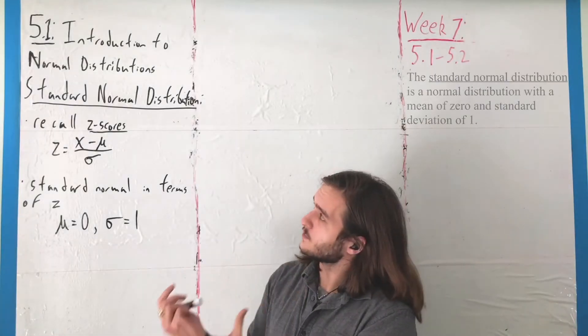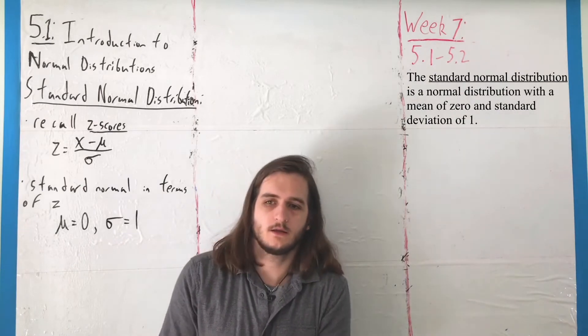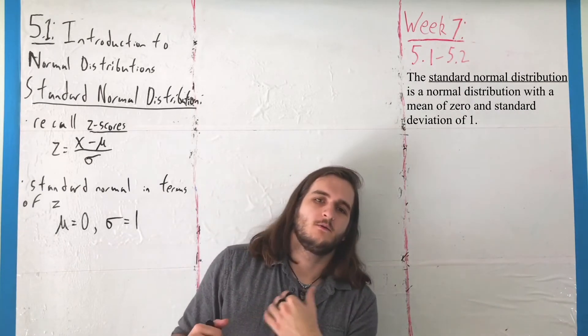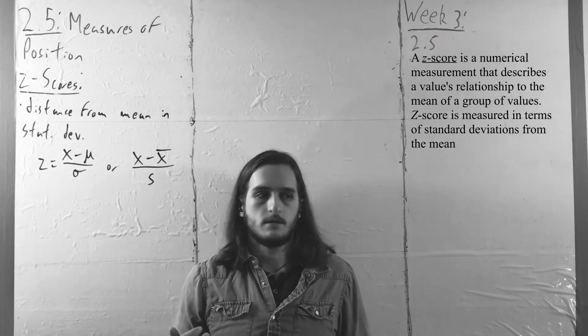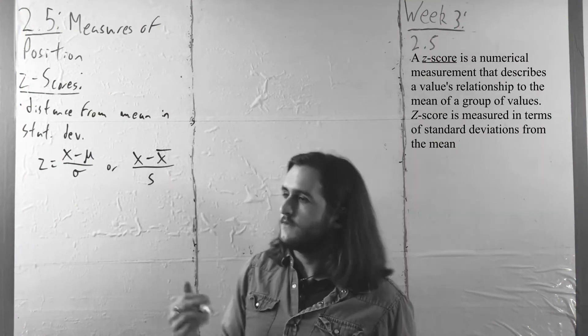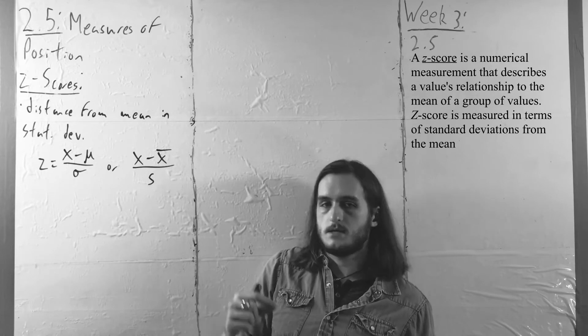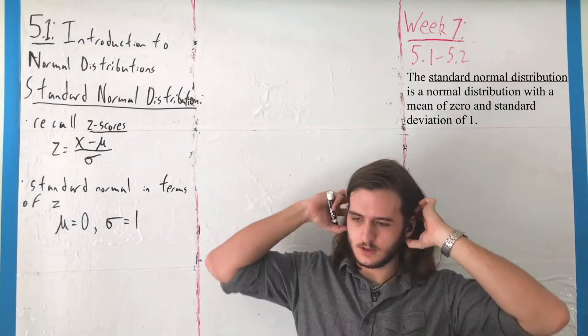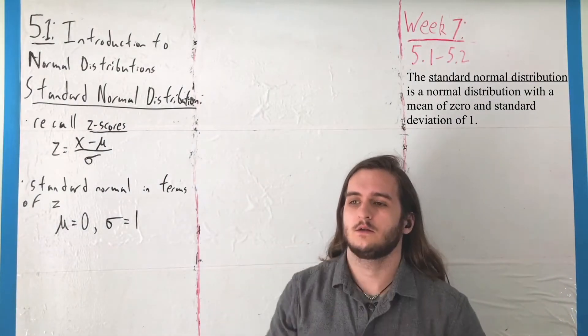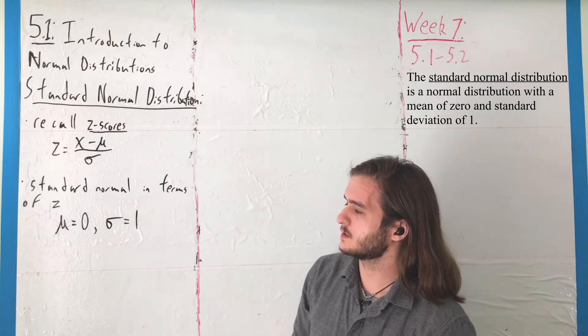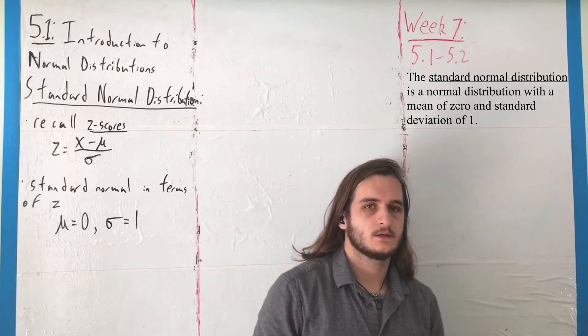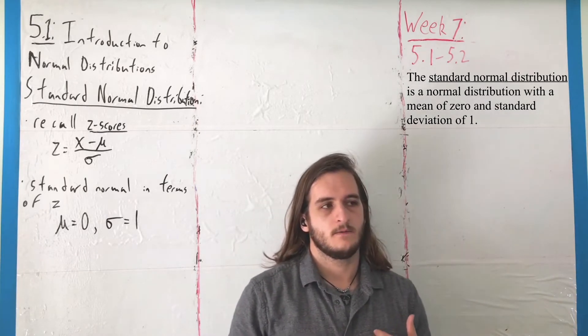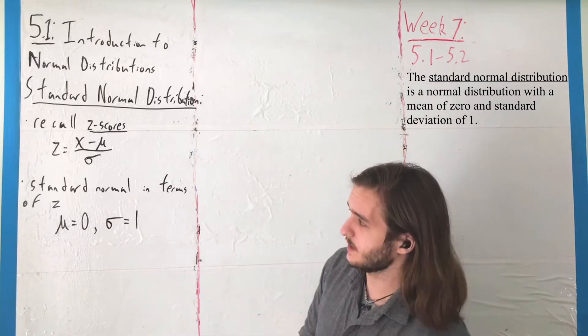So next we're going to talk about the standard normal distribution. To understand this, we should recall back in Chapter 2 when we looked at things called z-scores, or as we also saw them, standard scores, where what a z-score did was describe position in a data distribution in terms of distance away from the mean as taken through a number of standard deviations.